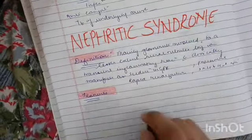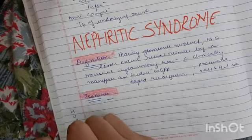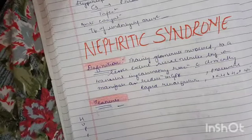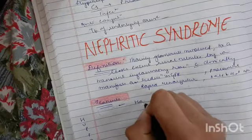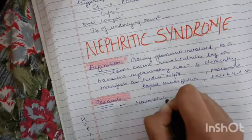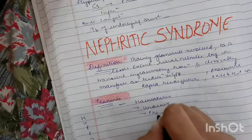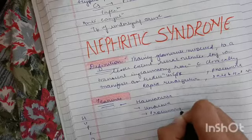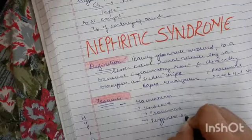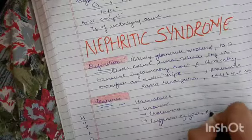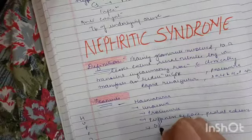For the features, remember the acronym HIPPO, but replace the I with U. H for hematuria, U for uremia, P for proteinuria, another P for puffiness of face and pedal edema, and O for oliguria.